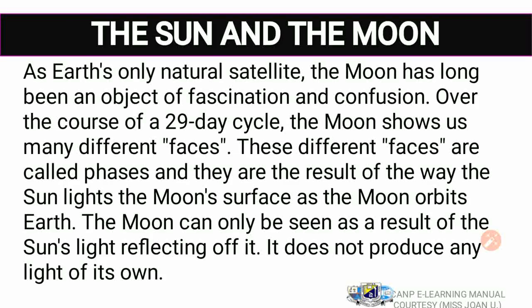As the Earth's only natural satellite, the Moon has long been an object of fascination and confusion. It shines from afar but it is confusing because over some time you think it is a light on its own, meanwhile it is not. Over a course of a 29-day cycle, the Moon shows us many different phases, which are the result of the way the Sun lights the Moon's surface as the Moon orbits Earth.